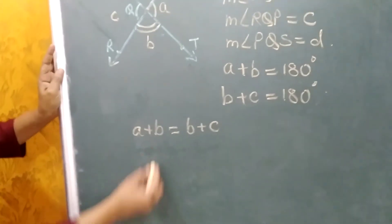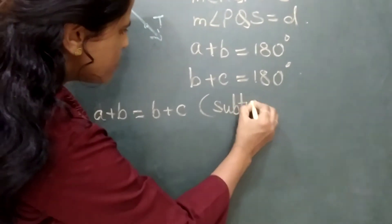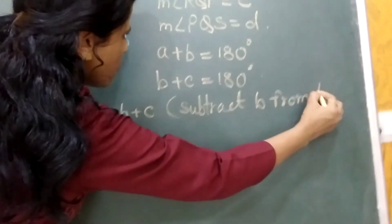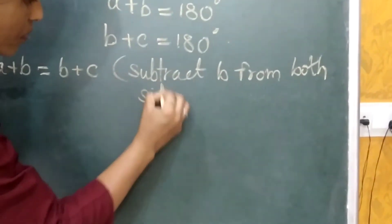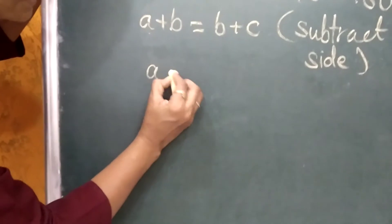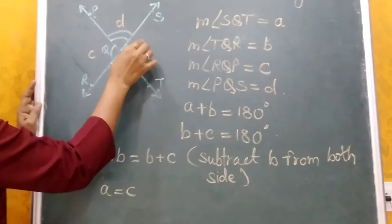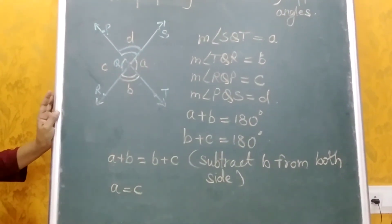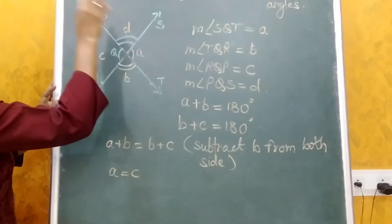If we subtract B from both sides, then what we get is A is equal to C. This means the measure of angle A is equal to the measure of angle C. Likewise, the measure of angle B is equal to D.